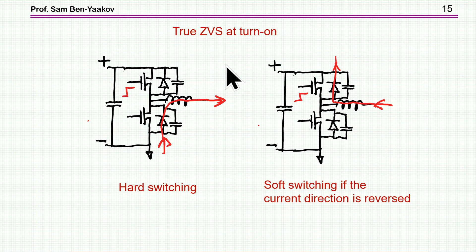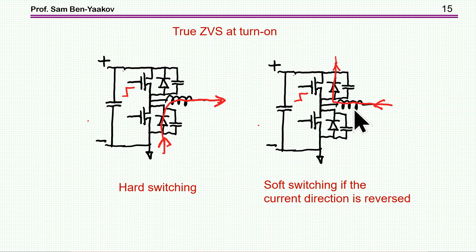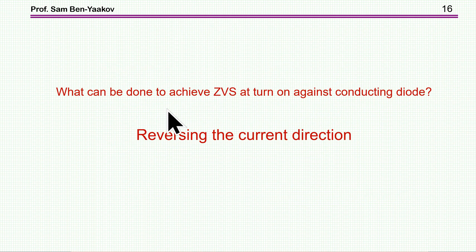So the moral of what we have seen: you have hard switching if you have a transistor which is turned on against a conducting diode — this is the worst case. You have soft switching if the diode is conducting and you turn on the transistor at the voltage of the diode. So if we can change the situation such that when we want to turn on this transistor we momentarily change the direction of the current, then we can turn on the transistor under zero voltage switching — a true ZVS rather than hard switching.